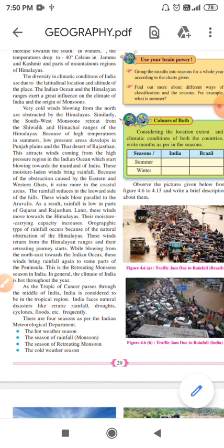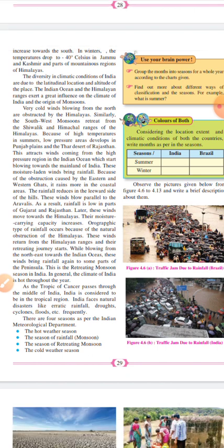In summers, a low pressure area is created and developed in the Punjab plains and the Thar desert of Rajasthan. During the summer season, the land is heated faster than the water body, so the Punjab plain and the Thar desert of Rajasthan develop a low pressure area due to maximum heat or temperature.